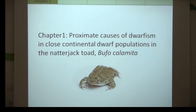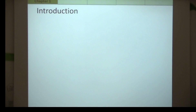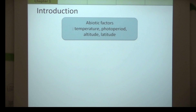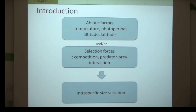My first chapter is on the proximate causes of dwarfism in close continental dwarf populations in Doñana in the natterjack toad Bufo calamita. There is intraspecific variation across animal taxa, and the factors that drive intraspecific size variation include abiotic factors such as temperature, photoperiod, altitude, and latitude, as well as selective forces such as competition or predator-prey interaction.